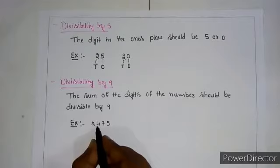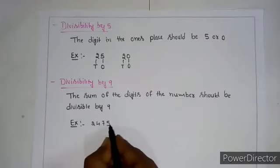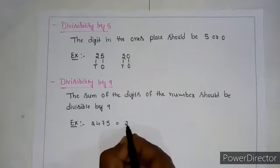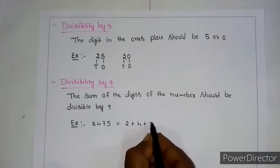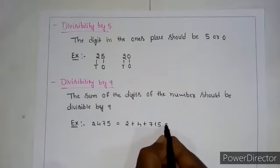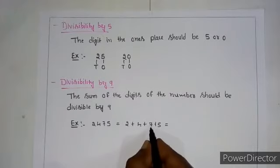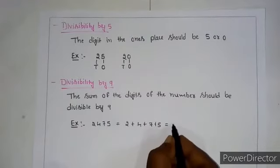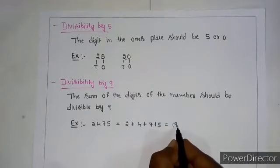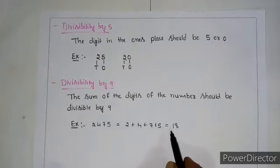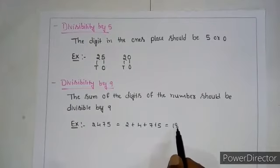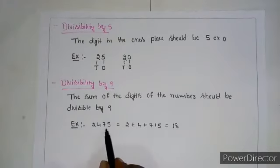For example, take 2475. When we add all these digits: 2 plus 4 plus 7 plus 5. 2 plus 4 is 6, 6 plus 7 is 13, 13 plus 5 is 18. The sum is 18, and 18 is divisible by 9 since 9 times 2 is 18. Therefore, this number is divisible by 9.